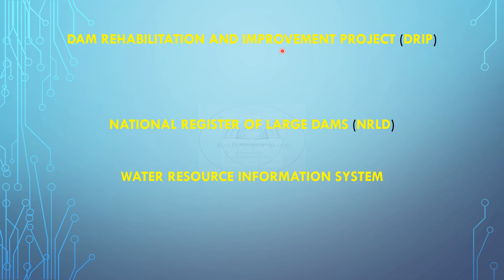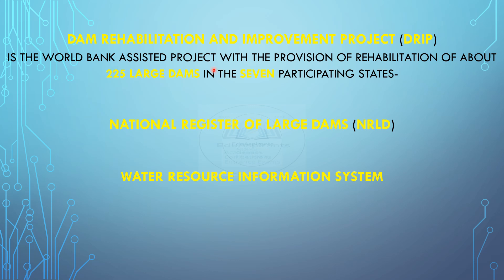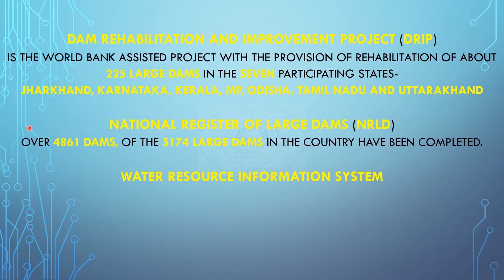The Dam Rehabilitation and Improvement Project, DRIP, is a World Bank assisted project with the provision of rehabilitation of about 225 large dams in seven participating states: Jharkhand, Karnataka, Kerala, Madhya Pradesh, Odisha, Tamil Nadu, and Uttarakhand. Under the National Register of Large Dams, NRLD, over 4,861 dams of the 5,174 large dams in the country have already been completed.